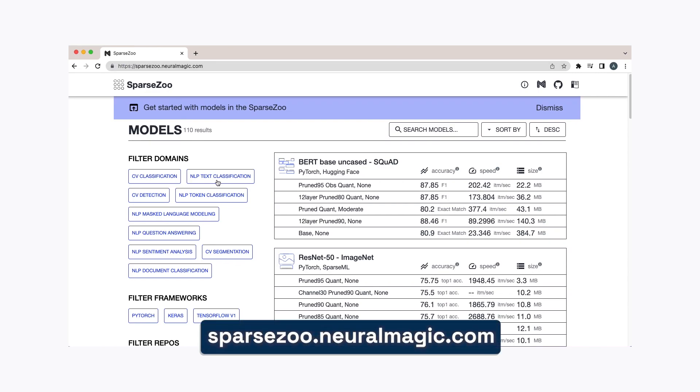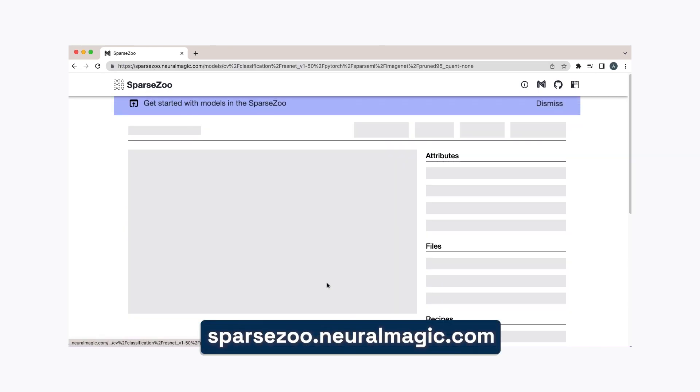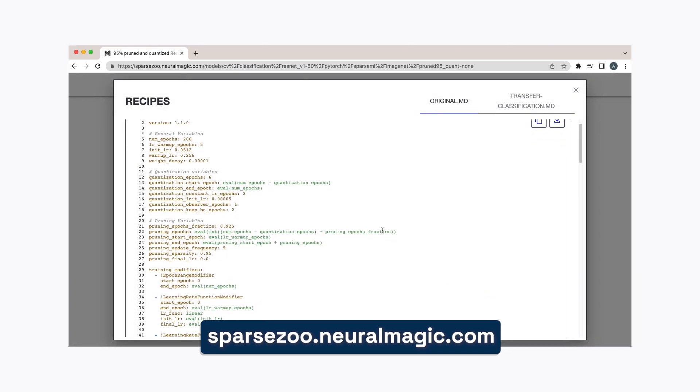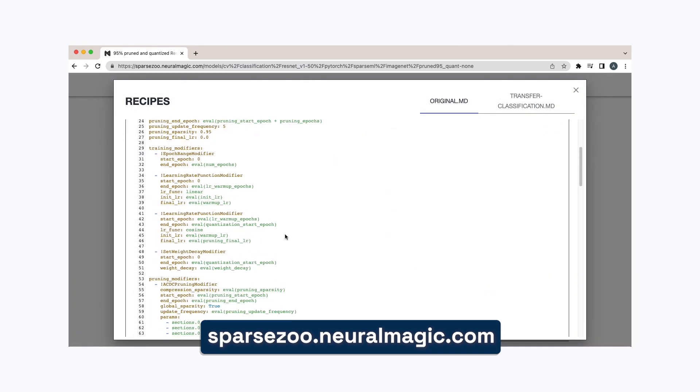That is all great, but with so many options, how do you create your own recipe from scratch? A great resource for this is again our SparseZoo. I suggest that you go to SparseZoo and check out the recipes used to sparsify the models listed there. Those recipes are great templates for getting started.